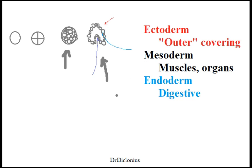In gastrulation, you can see that there's kind of a pouch here. This inner pouch is called the archenteron. The outside here is called the ectoderm, and then the inside will be the endoderm.